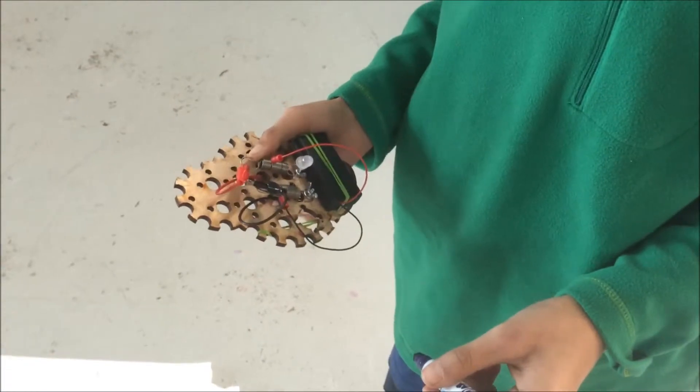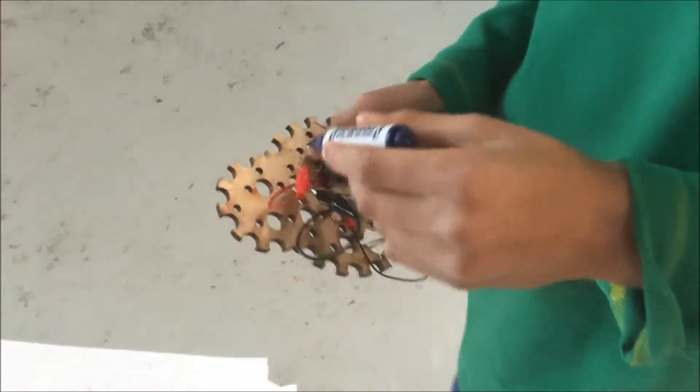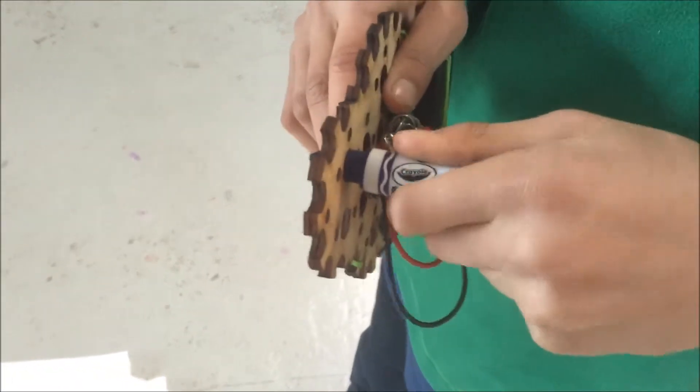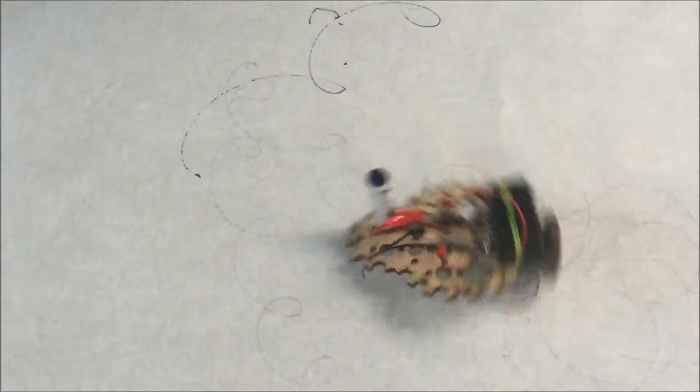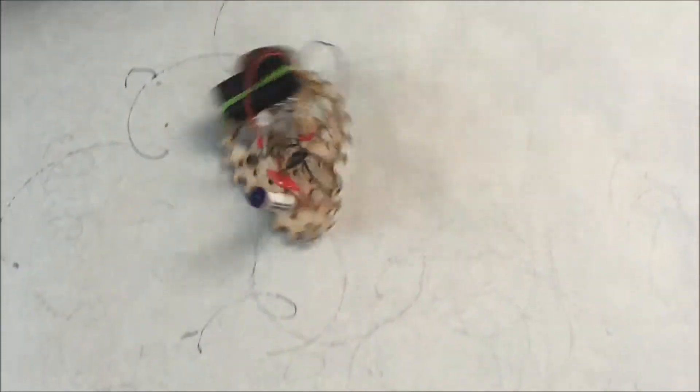And so here you can just stick markers into the little holes there. I mean, you can also attach them with rubber bands, but that works. And then you can use the wheels to just draw around.